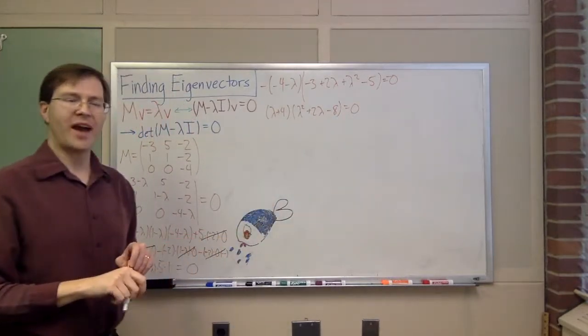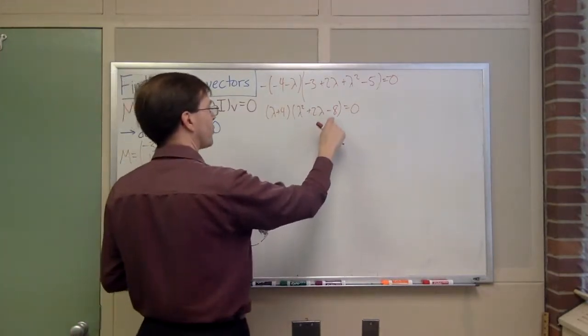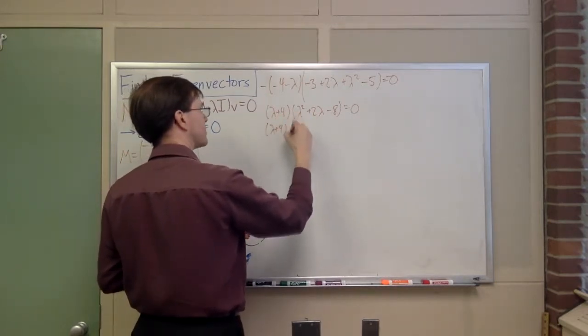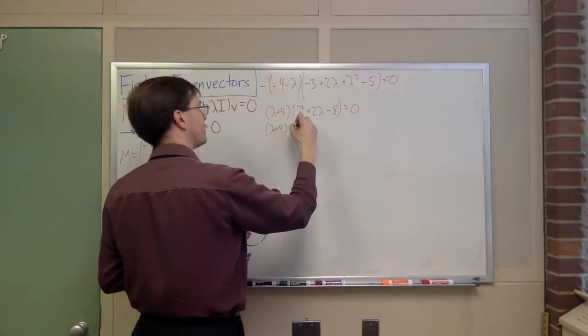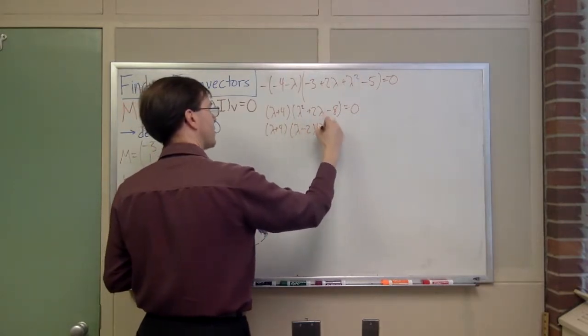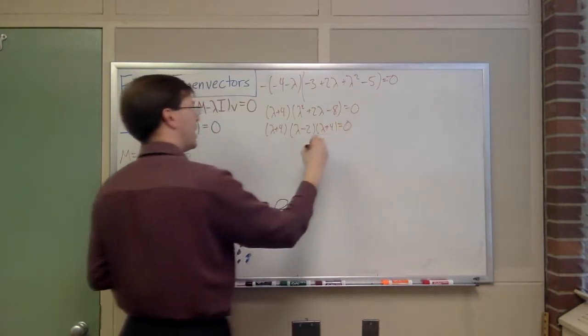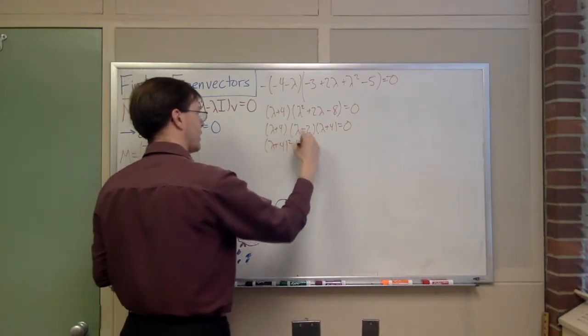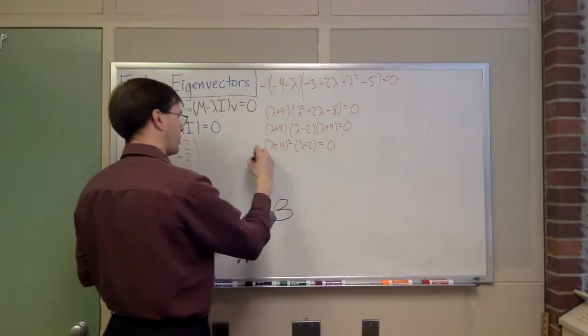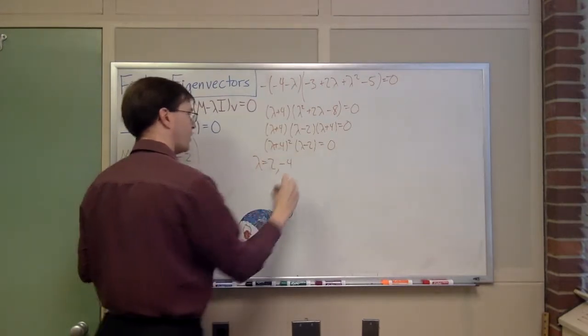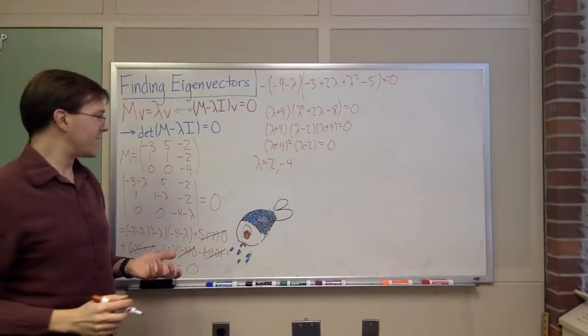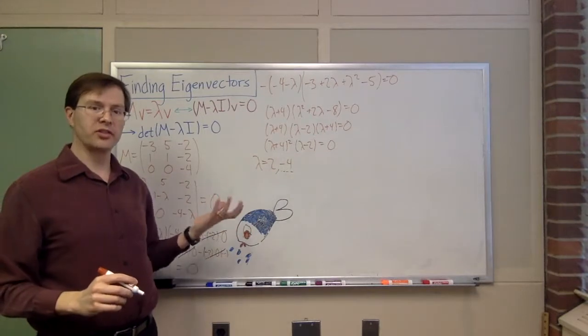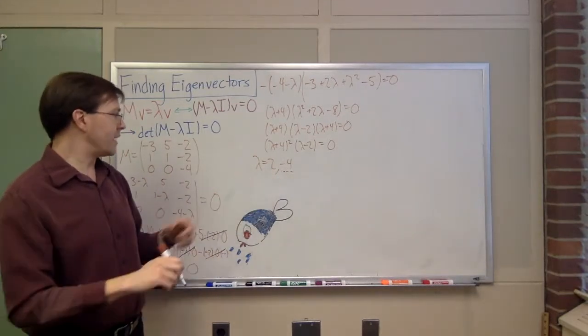I'm going to factor out a minus sign out front. In fact, I'll multiply both sides by -1 just so I get this to be lambda plus 4. So I've got lambda plus 4 times lambda squared plus 2 lambda minus 8 equals 0. And that's another thing that I can factor. I've got to have two things that multiply to give -8 that add to give plus 2. That seems to be lambda plus 4 times lambda minus 2 times lambda plus 4 equals 0. This is actually a double root. So I could write this as lambda plus 4 squared times lambda minus 2 equals 0.